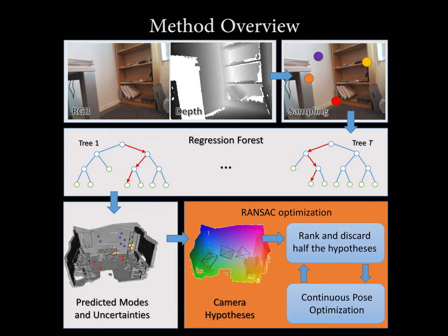This allows us to determine a set of camera pose hypotheses. We use a RANSAC optimization that leverages the uncertainty of each sample to perform a continuous update of these hypotheses. Each optimization step discards the worst half of the candidate poses until we attain the final result.